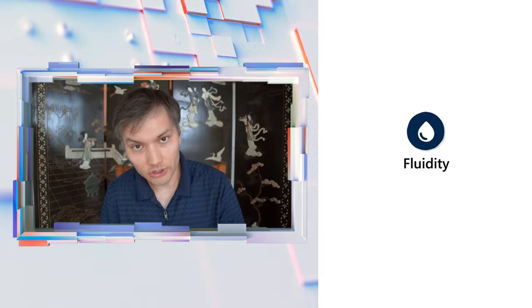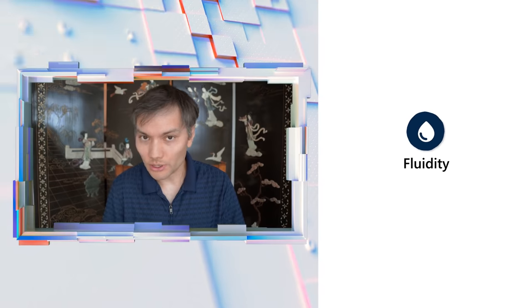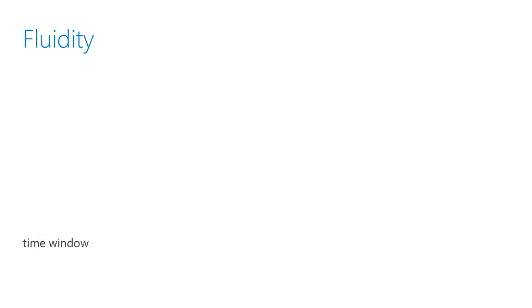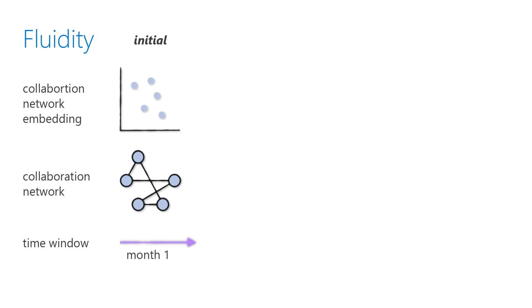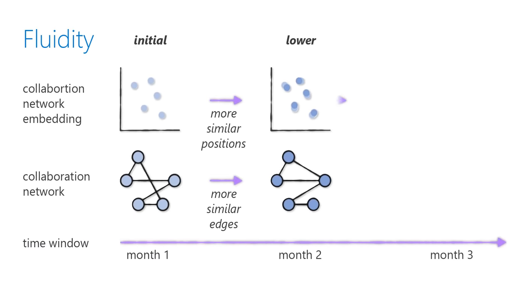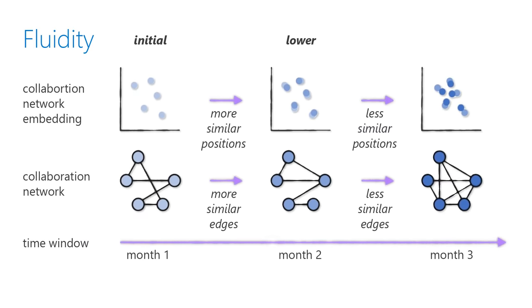The next metric is called fluidity — referred to as 'omni' in the Grasp Logic library that backs this. Fluidity measures how much a person's network changes over time. For example, a developer working inside a core team talking to the same people at the same volume every month would have a very low fluidity score. Someone who has been reorganized into a completely different organization and is now talking to completely new people would have a very high fluidity. This allows us to measure network change over time based on observed collaboration patterns.